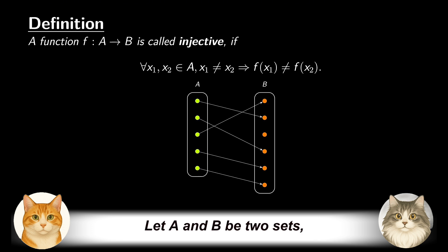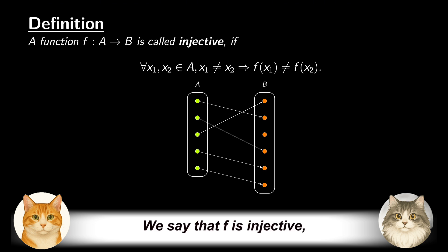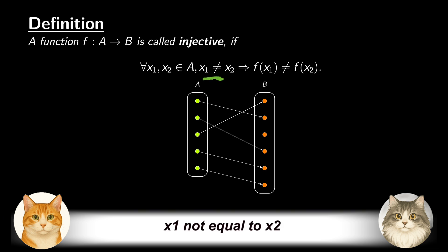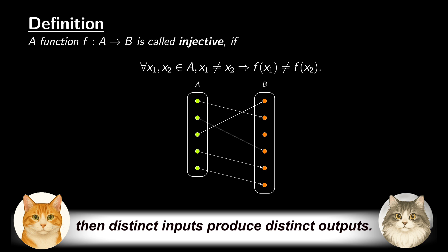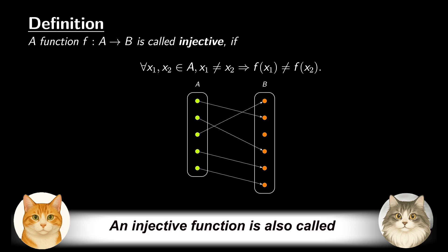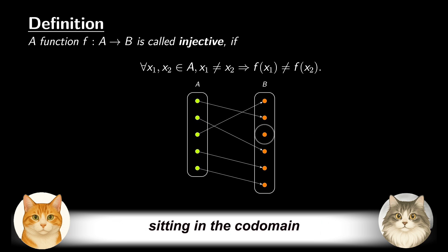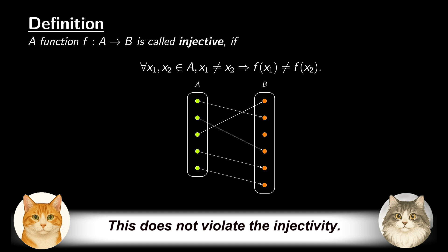Let A and B be two sets, and let F be a function from A to B. We say that F is injective if, for any elements x1 and x2 in A, x1 not equal to x2 implies f(x1) not equal to f(x2). In other words, if we think of F as a machine, then distinct inputs produce distinct outputs. An injective function is also called a one-to-one function. Note that there might be elements sitting in the codomain that the function never touches — this does not violate the injectivity.